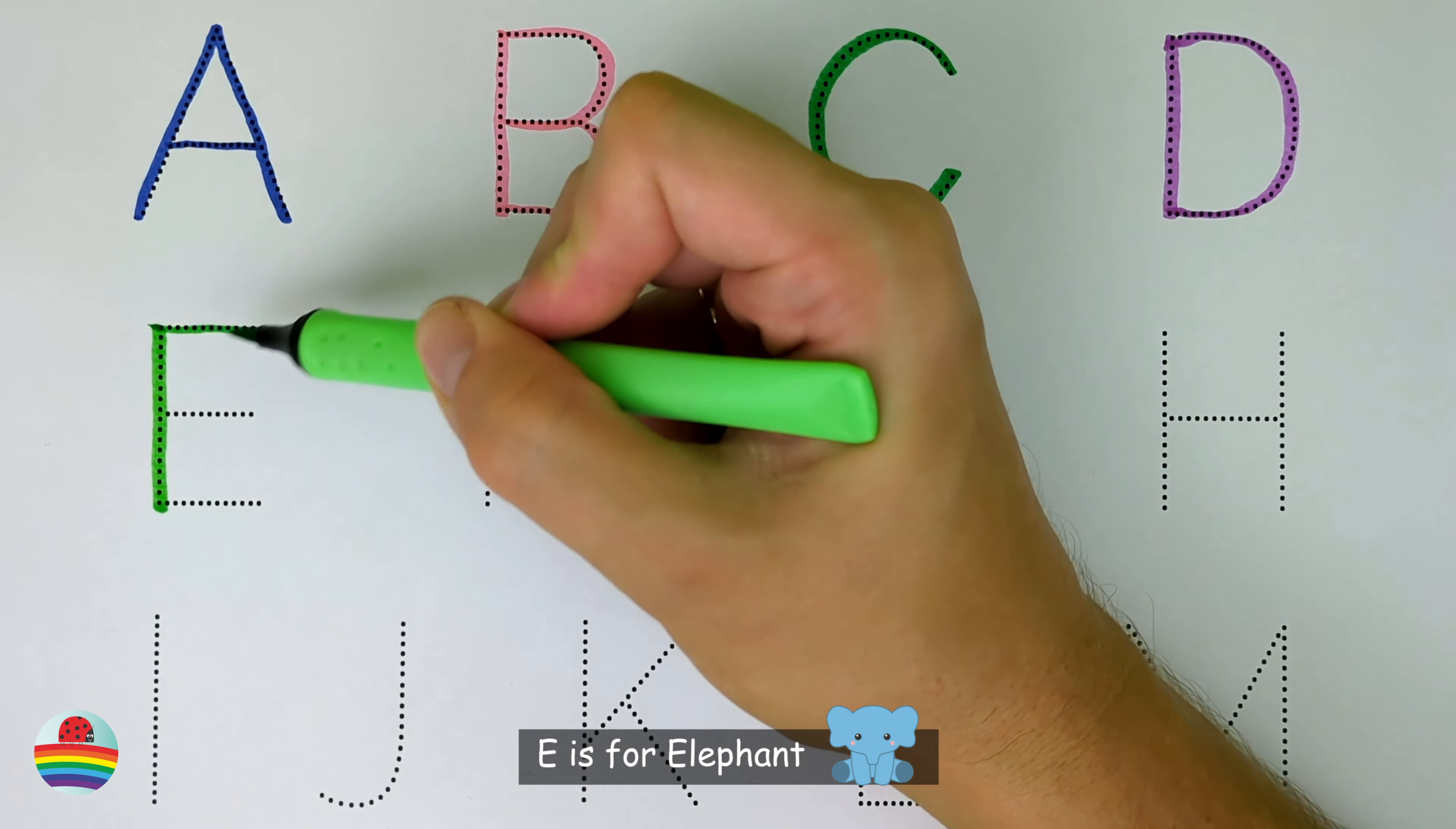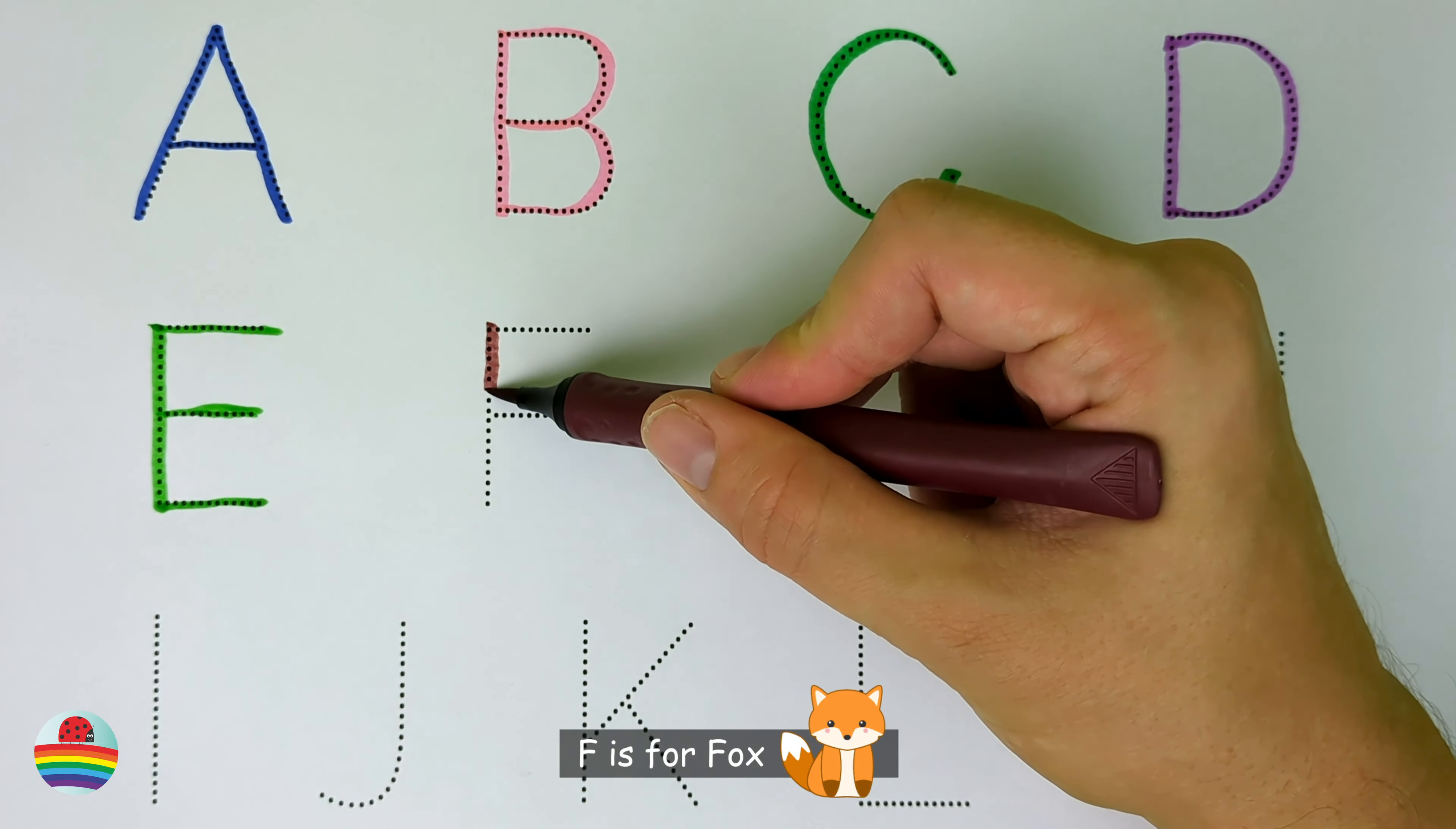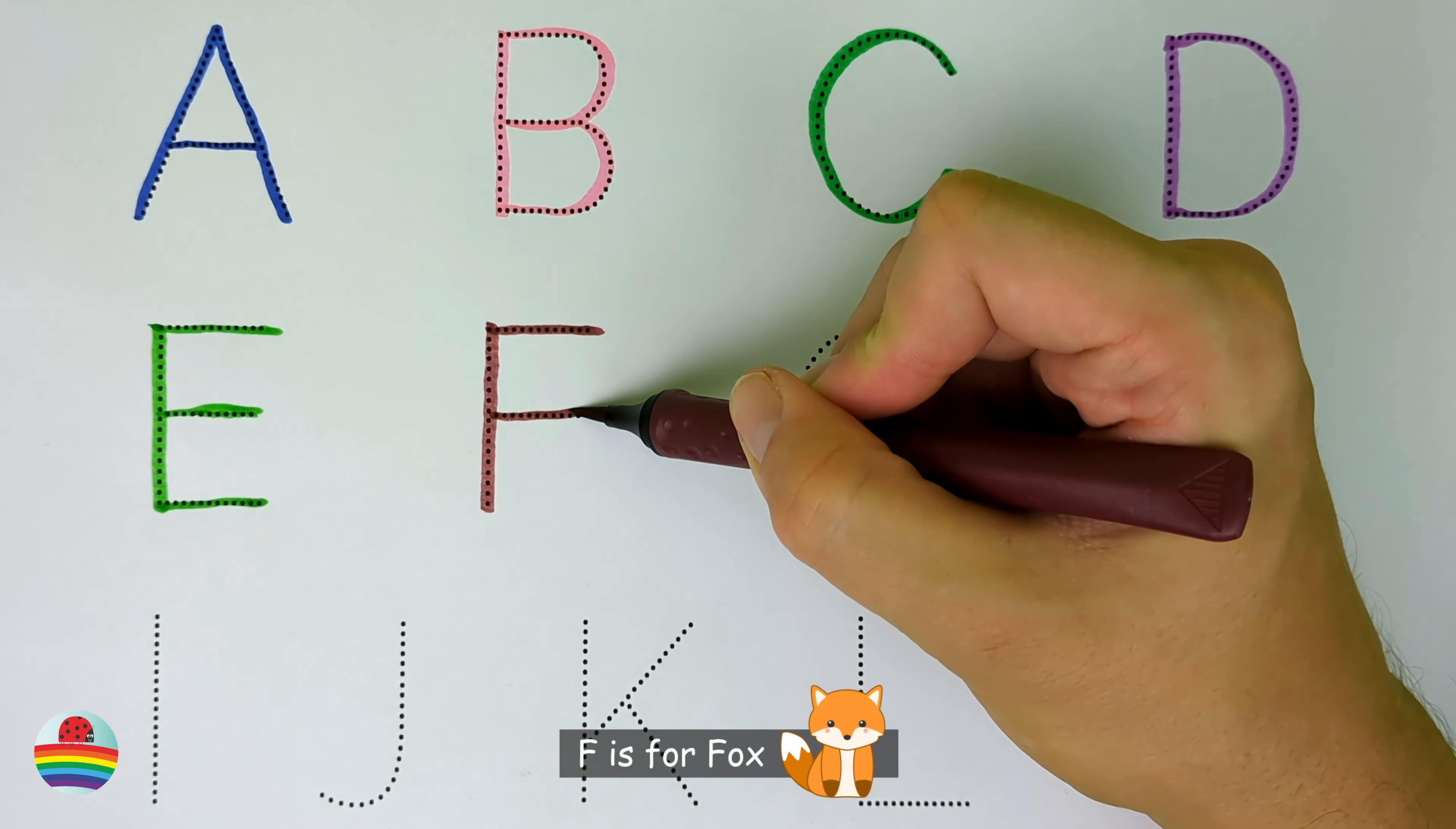E. E is for elephant. E. F. F is for fox. F.